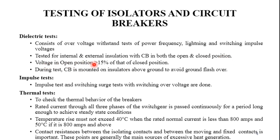Generally, the voltage in the open position is 15% greater than that in the closed position. During the test, the circuit breaker is mounted on insulators above the ground to avoid ground flashover, since there is a possibility of grounding when overvoltage above the rated voltage is applied. For the impulse test, the standard lightning impulse wave shape is used — similar to insulator testing — and switching surge tests with overvoltage are also conducted to assess performance under switching operation overvoltages.